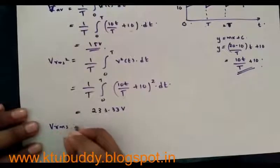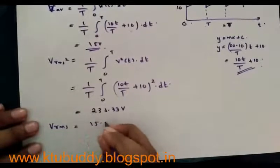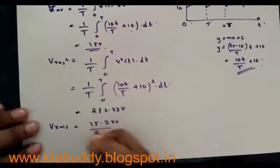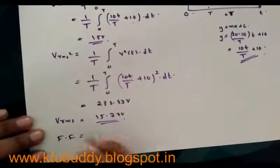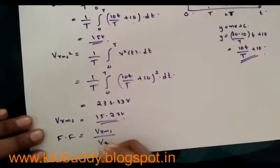The value of form factor can be easily calculated. To remind, form factor is given by the ratio of V_rms to V_average.